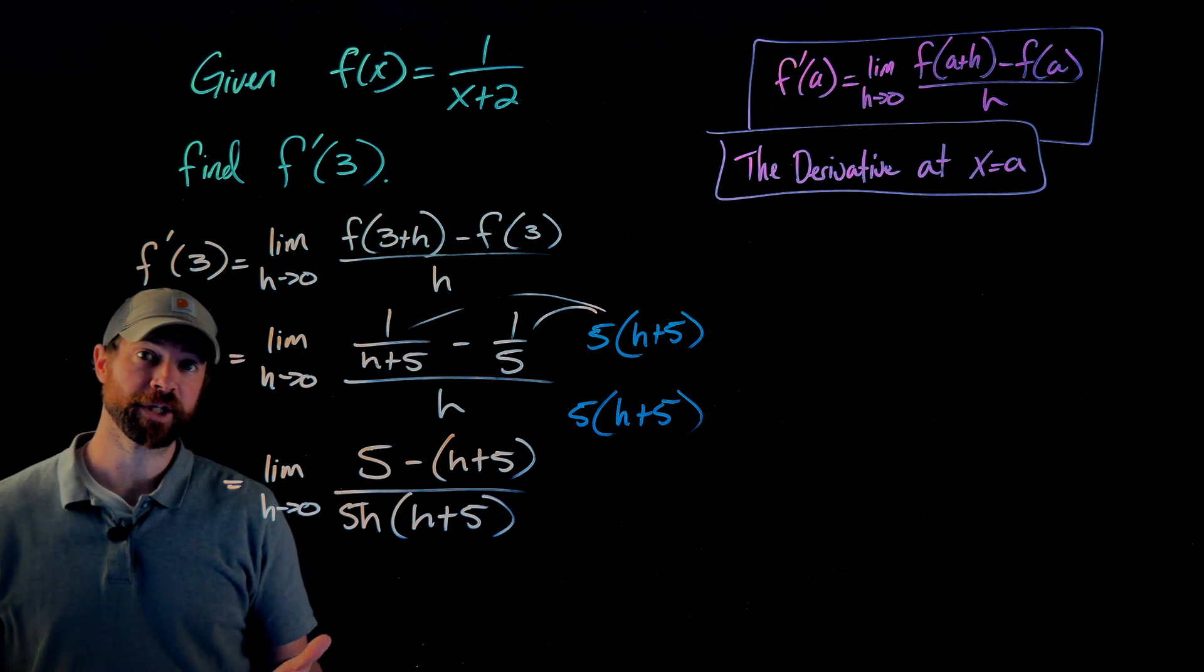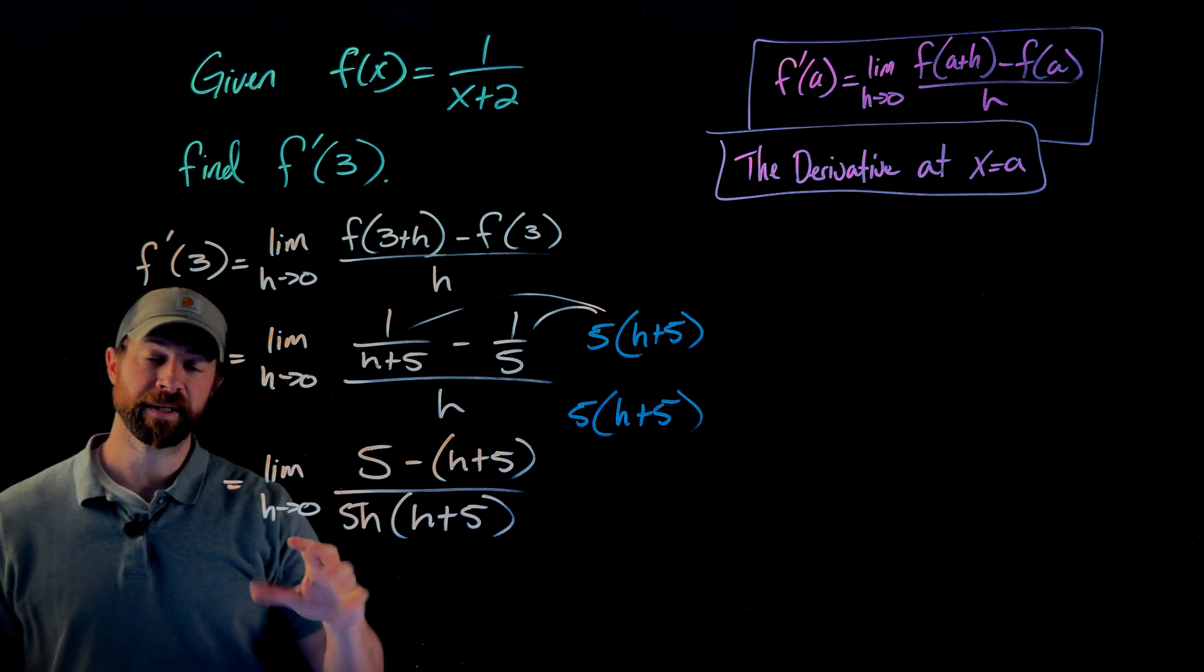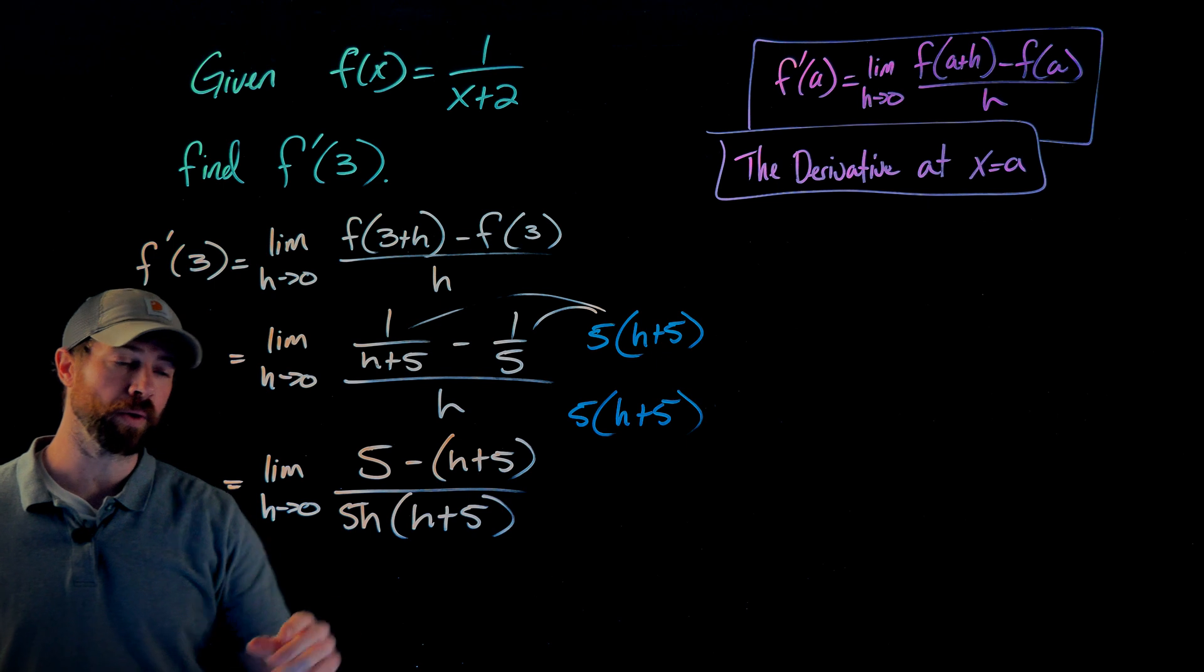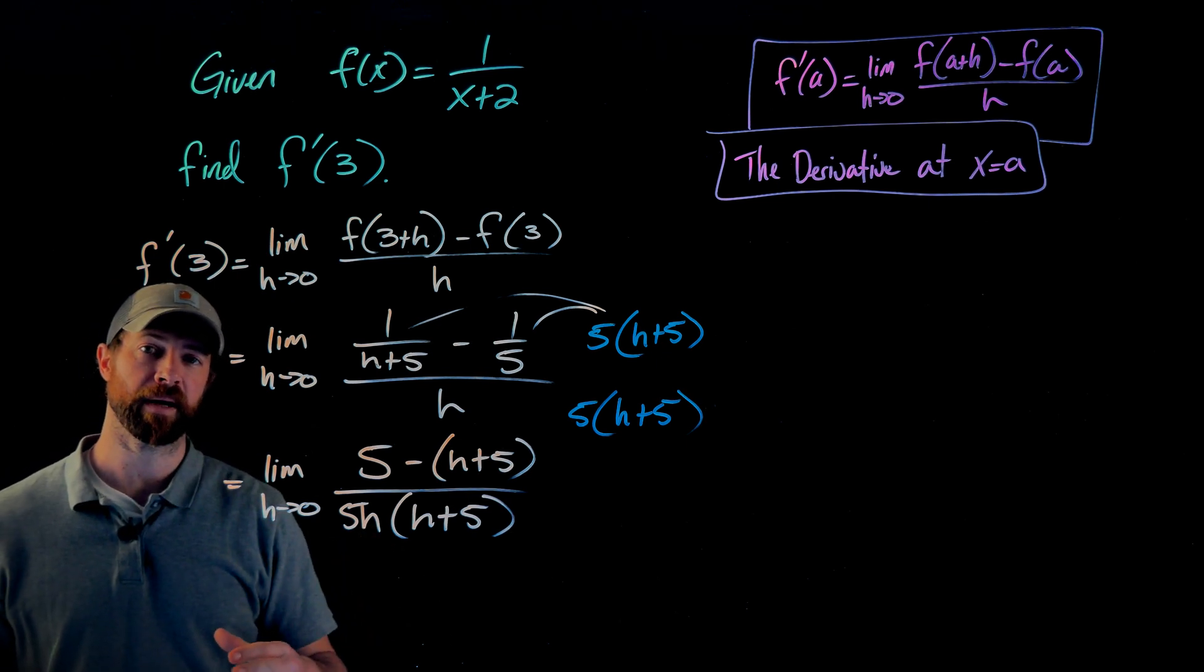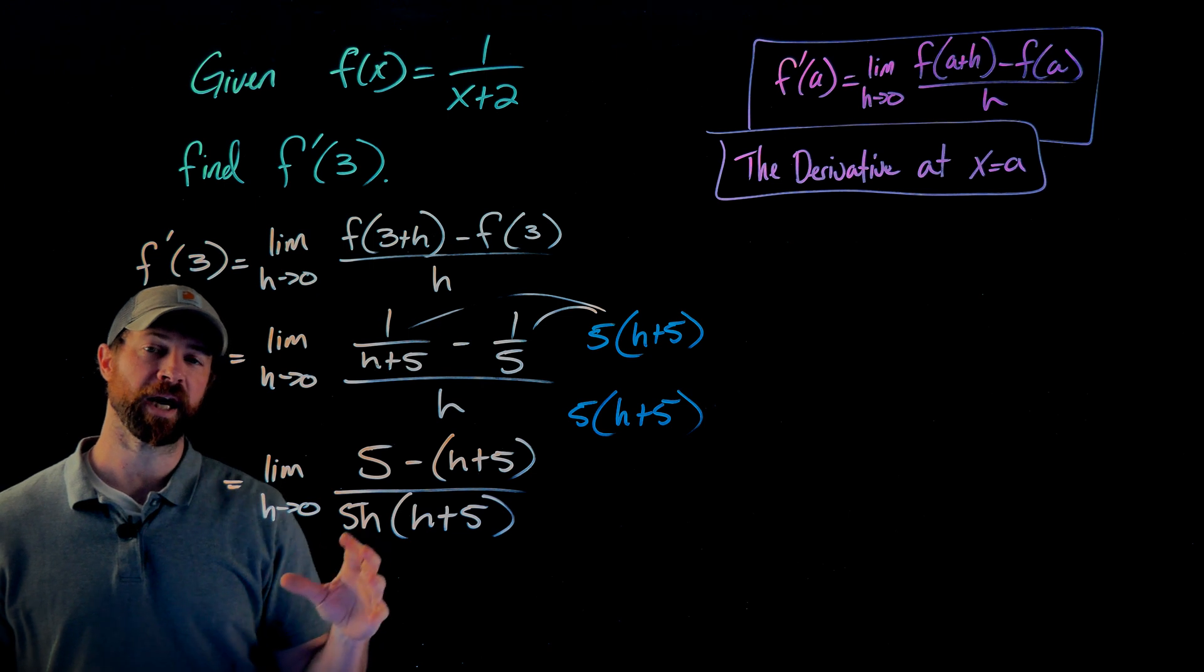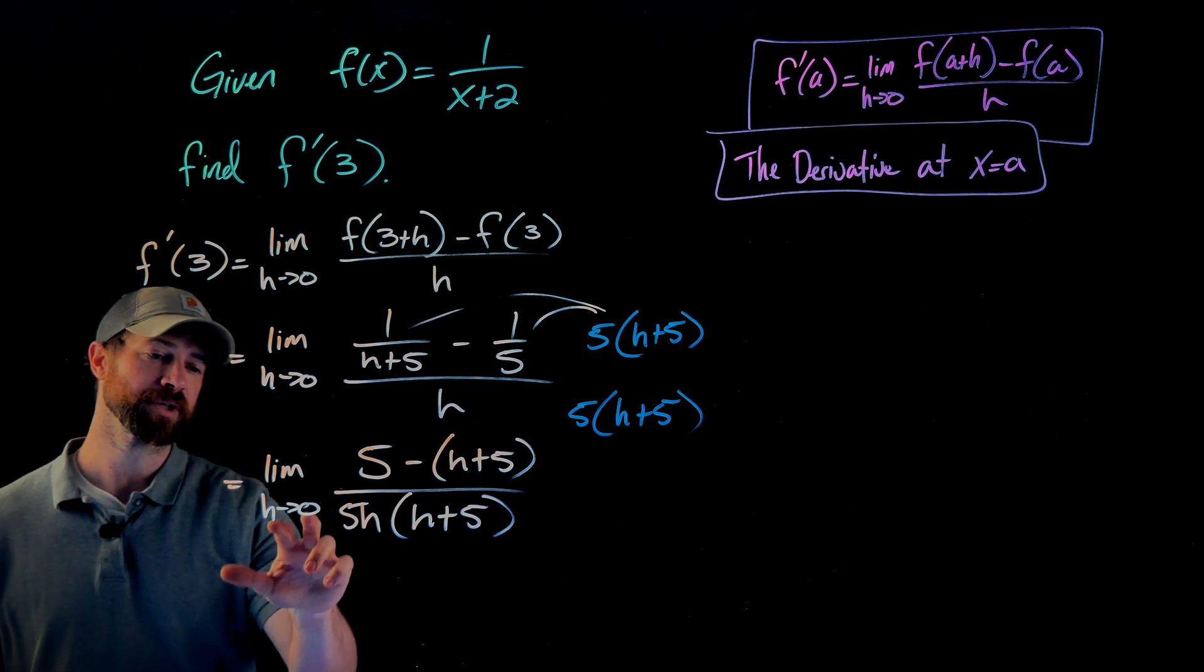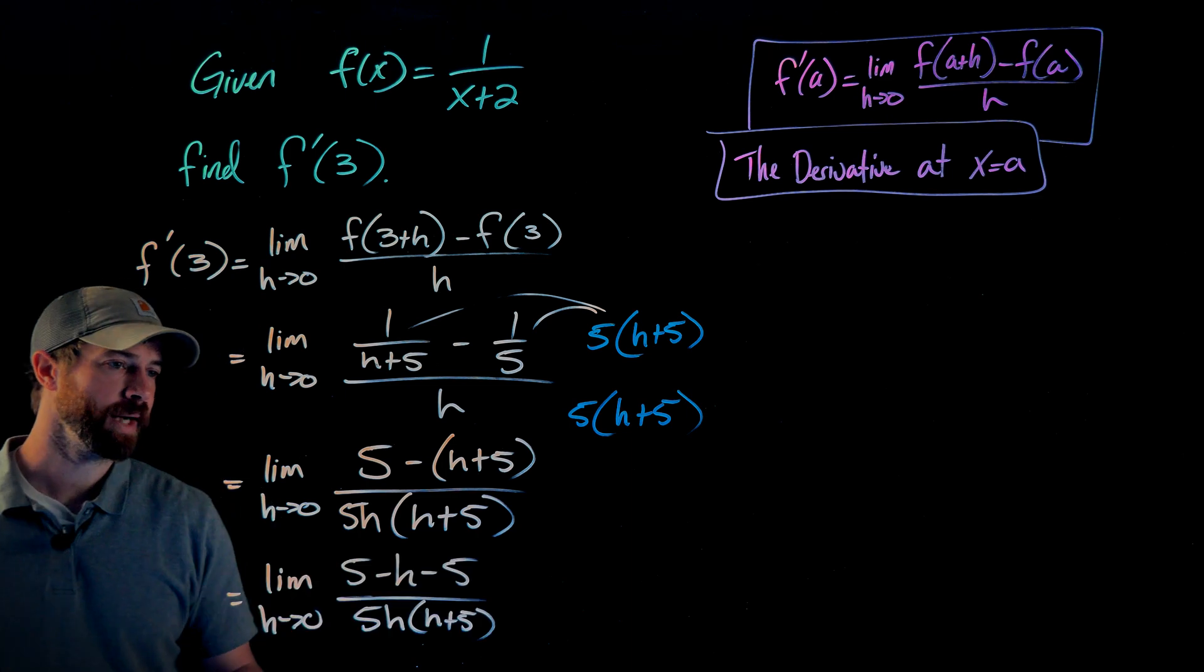And that's really the big trick for this problem. The rest is just kind of doing some canceling if I can. Again, my goal is this factor of h down here. I want to try to cancel that somehow, so then my denominator does not go to 0, and I can directly substitute this value of h equaling 0.